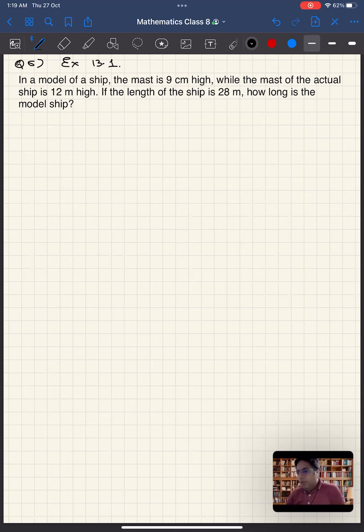Okay, now let's look at question number five. So it says that in the model of the ship, if this is the model, in the model of the ship, the mast is nine centimeters high. So this is nine centimeters.